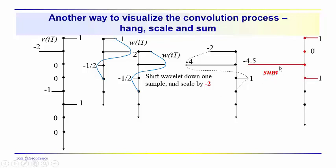Then in the process we're summing these together. So on the sum, when we take this output and this output and sum them together, we get one, we get two minus two, then we get minus one-half minus four, so we get minus four and a half, and we get zero and one, so we get one on the output. Then we just keep doing this with each reflection coefficient. As we go down the reflectivity series, we'd hang the wavelet — in this case it would get flipped — and scaled by minus one instead of minus two, so we'd have minus one, minus two, and plus one quarter, hanging from that reflection coefficient. You continue on with this process in order to get the seismic signal.